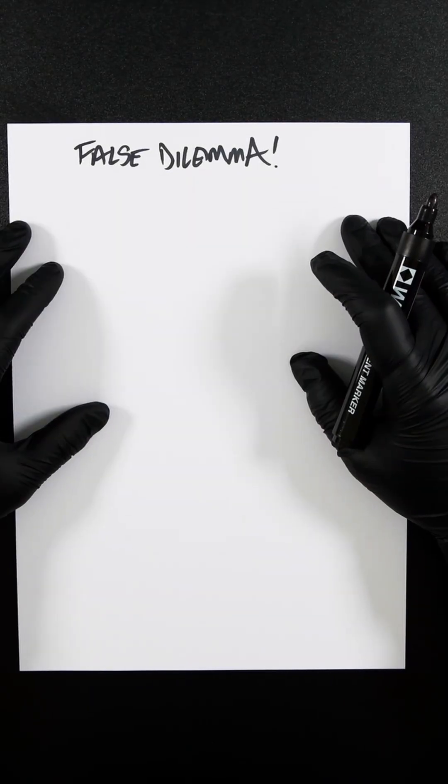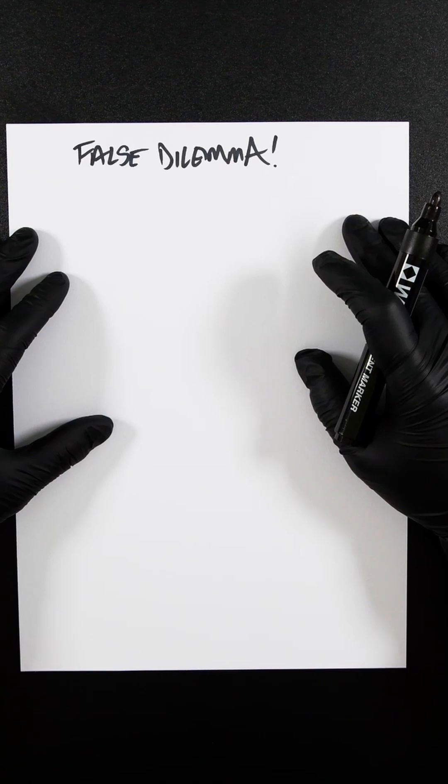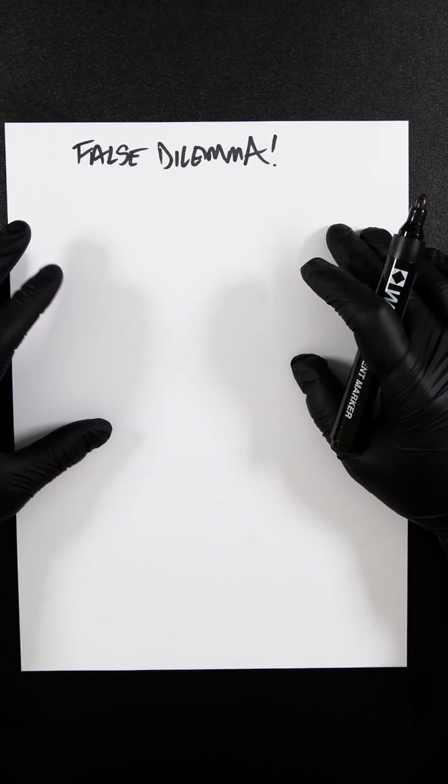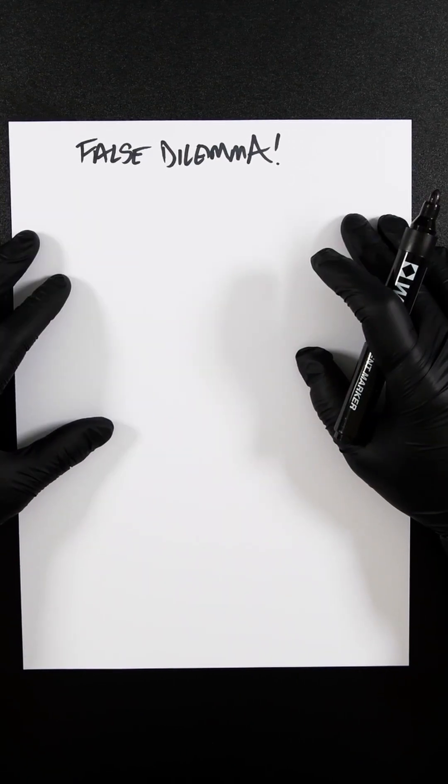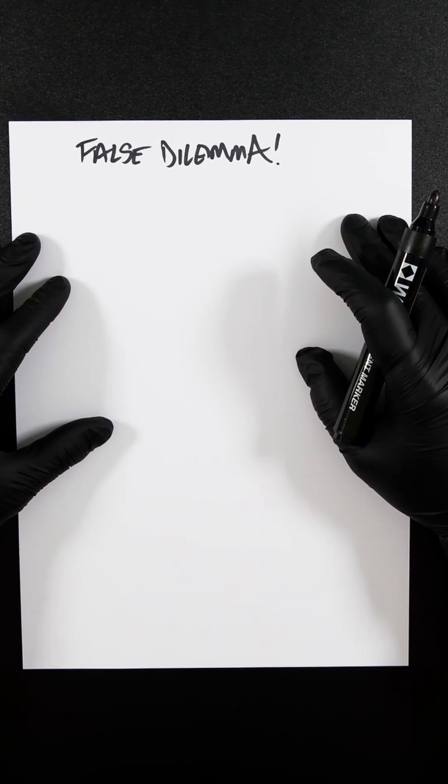The false dilemma fallacy, also called the false dichotomy, occurs when an argument presents only two options as if they are the only two possibilities. I think we've all seen people asking questions and saying answer my question with yes or no.